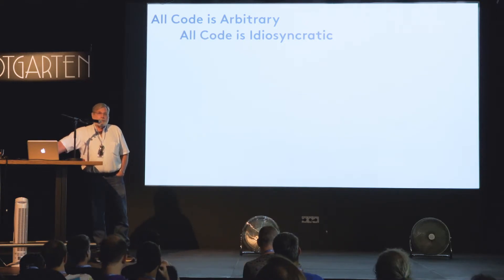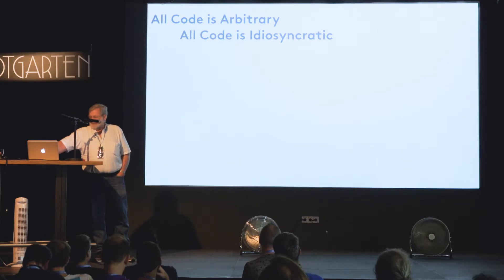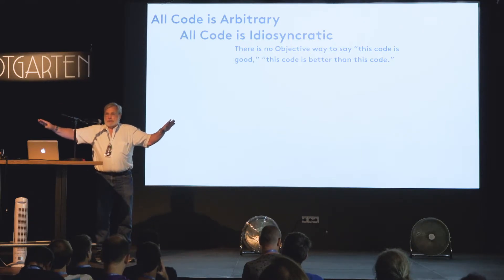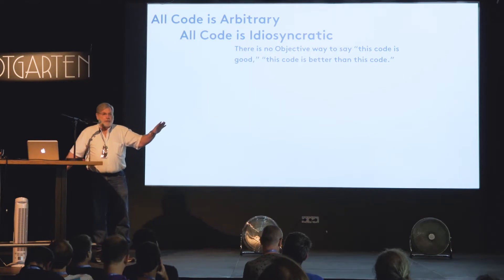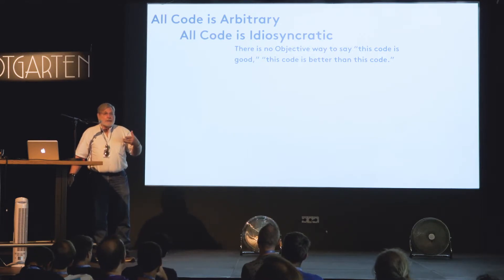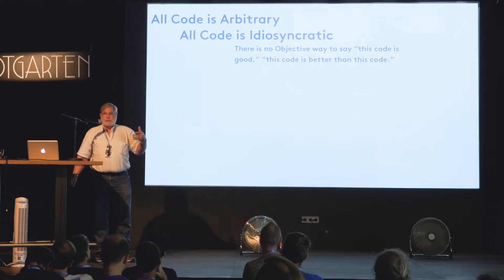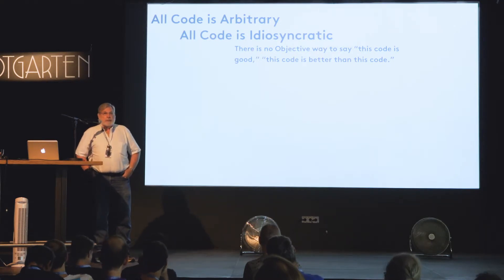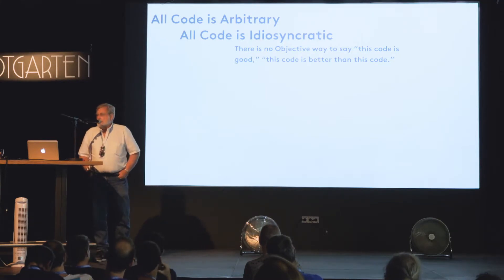You can get code by committee — COBOL was built by a committee — but that doesn't necessarily mean it's not idiosyncratic. There is no objective way to say that this block of code is better than that block of code, or that it is even correct. All you can do is create equally arbitrary secondary criteria by which you judge the correctness or goodness of a bit of code. For a long time, code was considered really good if it ran in a tiny memory footprint and was fast to execute — machine speed and memory footprint were the de facto criteria.